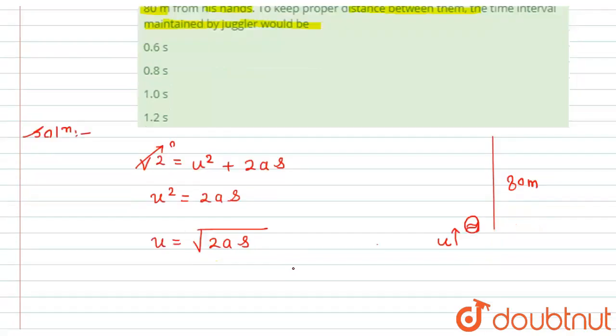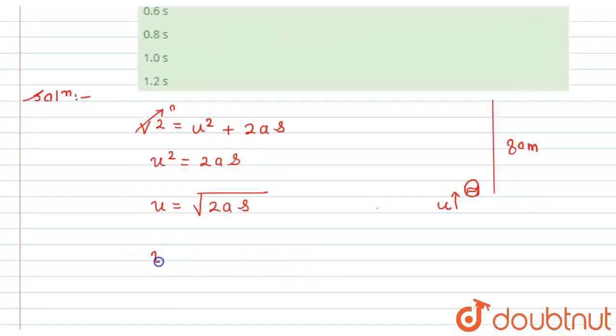After substituting the values we get the initial velocity of throwing the ball, that is u = √(2 × 10 × 80) = √1600 = 40 m/s.